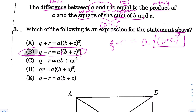To summarize: just turn the word sentence into a number sentence, paying attention to keywords: 'difference' means subtract, 'equal to' means equal sign, 'product' means multiply, 'square' means second power, and 'sum' means add.